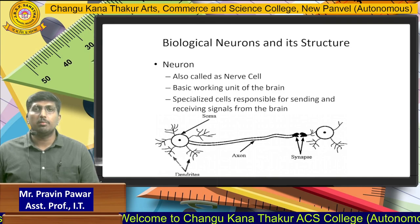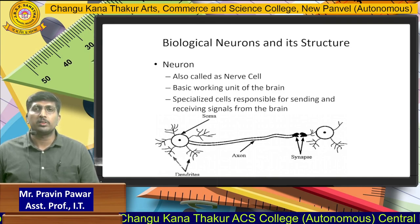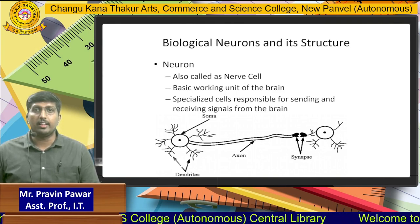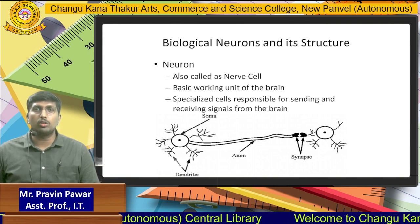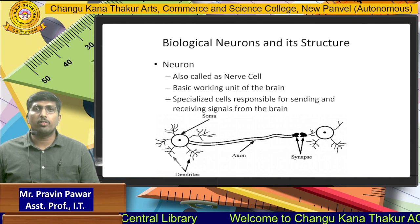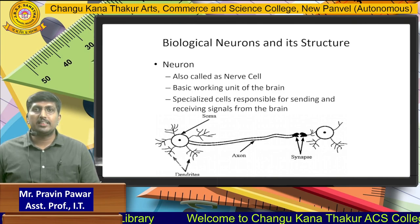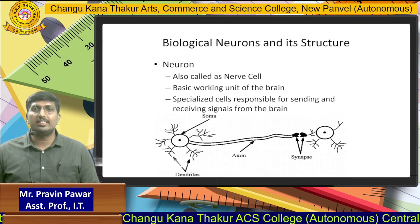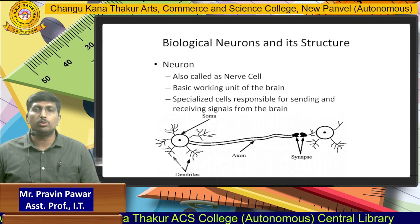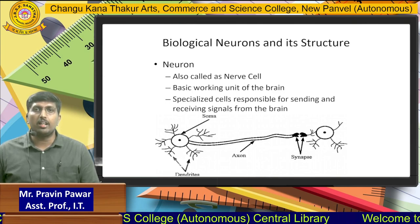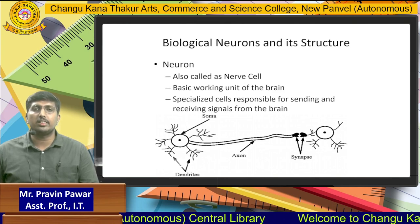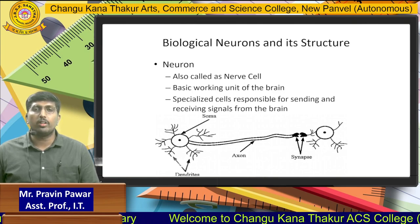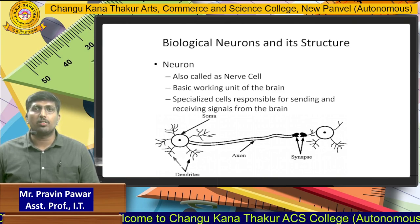These are the parts of the biological neuron which provide information from one point to another and generate some kind of output, which is why they are known as neurons. Neurons are also called nerve cells, the basic working unit of the brain, and specialized cells responsible for sending and receiving signals from the brain. They are used to collect data, process data, generate outputs, and send them to connected nervous systems.